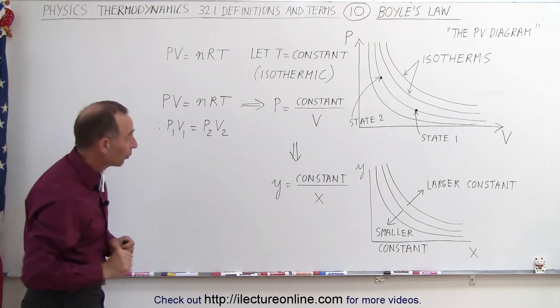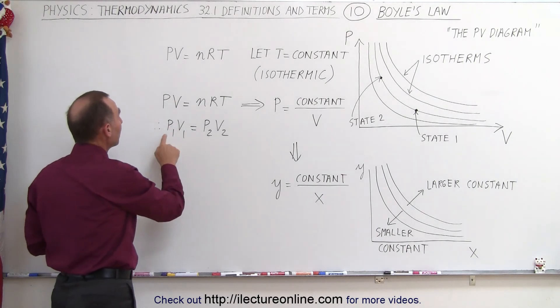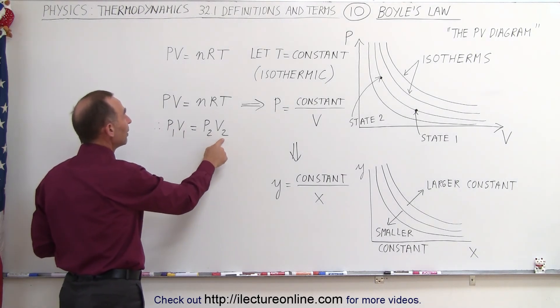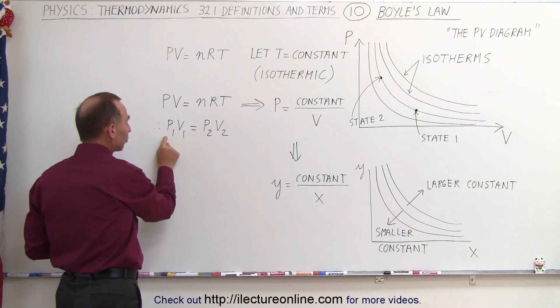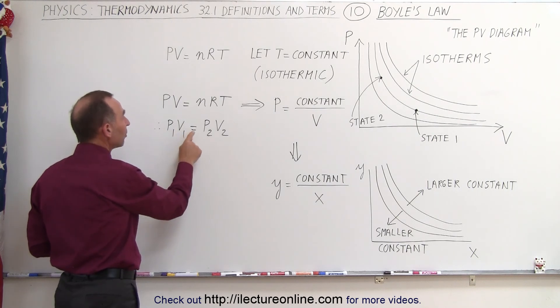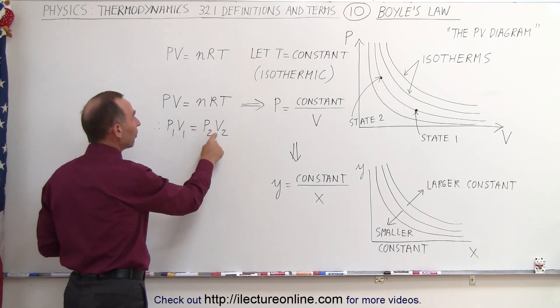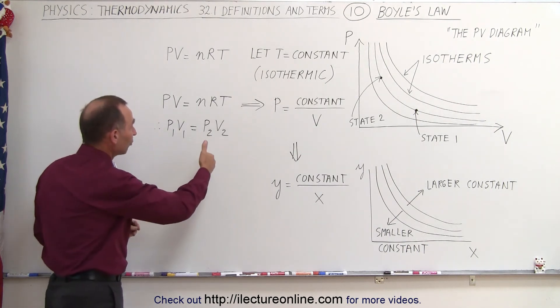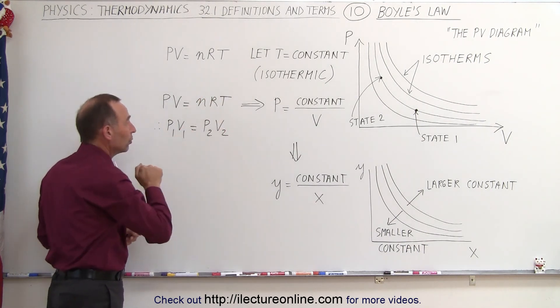Now with Boyle's law, we also know that P1 times V1 equals P2 times V2. The product of the pressure times the volume in state 1 must equal the product of the pressure times the volume in state 2, which means if the pressure goes up, volume must go down.